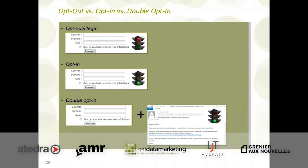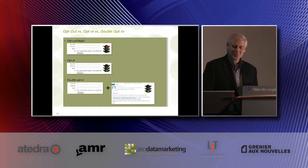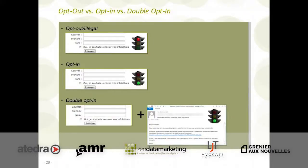On a roulé longtemps là-dessus, mais c'est fini. C'était finalement décoché — opt-out — et les gens ne se rendaient pas en bas de la page, puis on augmentait les bases de données comme ça. L'opt-in, c'est vraiment la façon de faire : les mêmes informations, mais la personne doit cocher le « oui », comme dans l'exemple qu'on a vu du CRTC.